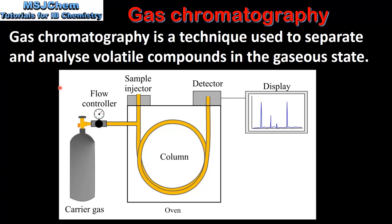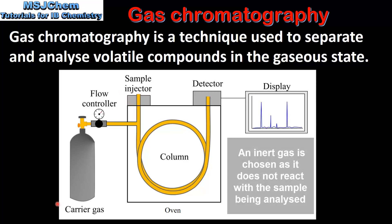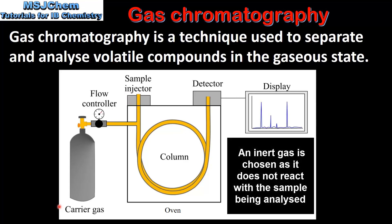Here we have a diagram of a gas chromatograph. The sample is injected into the gas chromatograph where it is vaporized and carried through the column by a carrier gas. The carrier gas, which is an inert gas such as helium or nitrogen, is known as the mobile phase.